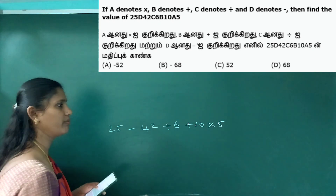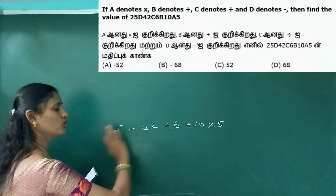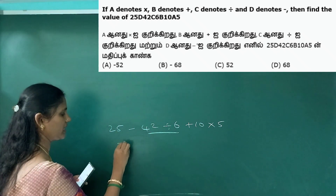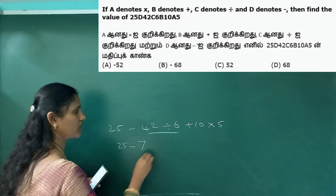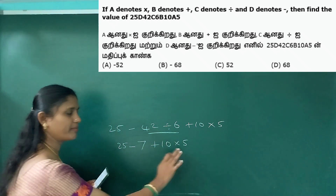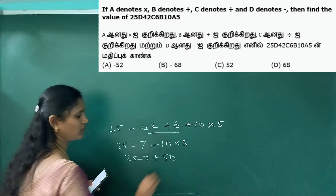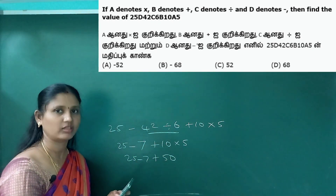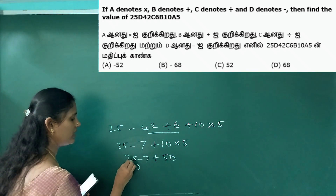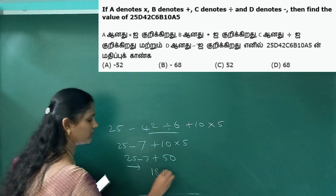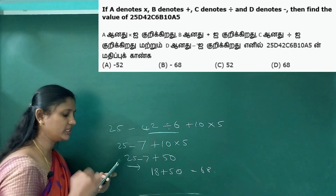Division is first. 42 divided by 6 equals 7. Then multiplication: 10 into 5 equals 50. So we get 25 minus 7 plus 50. That gives us 25 minus 7 equals 18, then 18 plus 50 equals 68. So the answer is D, which is 68.